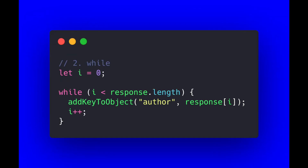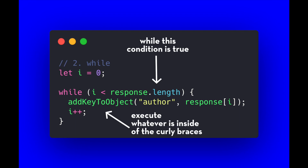The second type of loop is called a while loop. You can see that we still have a variable i set to zero, but it sits outside of the while loop. We have the while keyword and then a condition that needs to be true in order for it to execute — in our case, while i is less than response.length, the same condition as the for loop. Inside the while loop we execute the addKeyToObject function, then increment i by one, and it keeps running until the condition is no longer true.